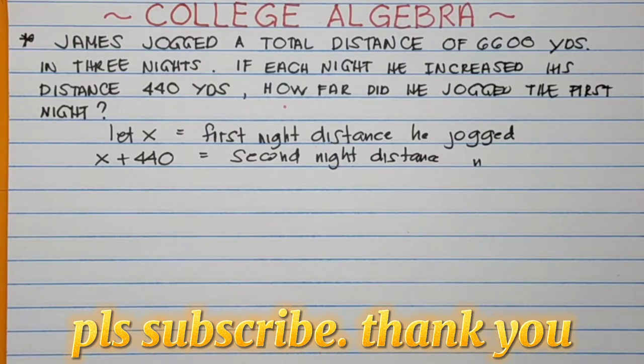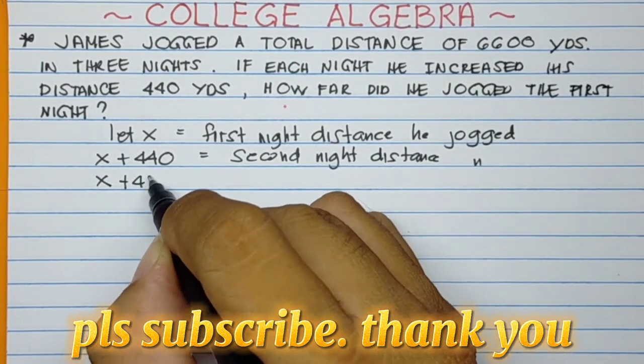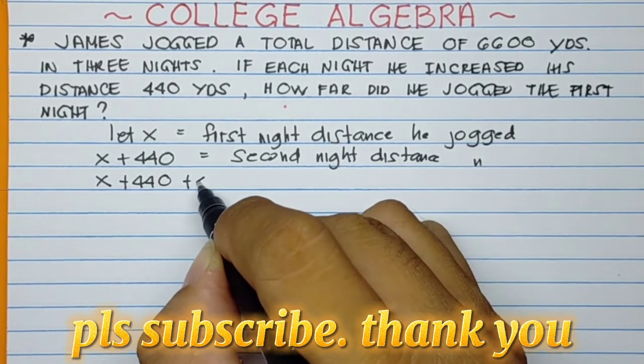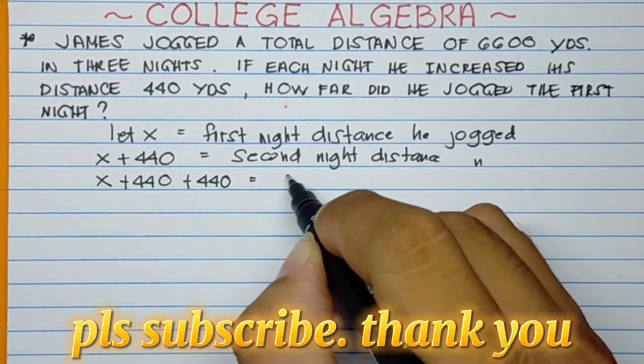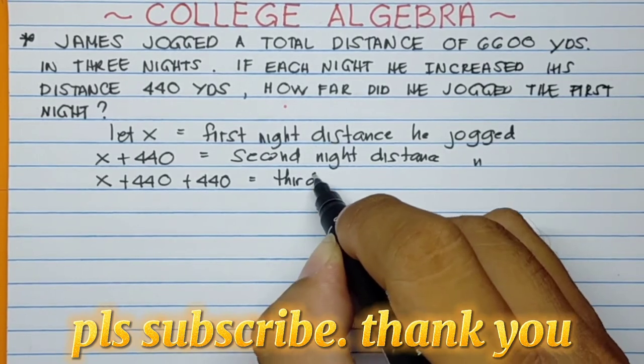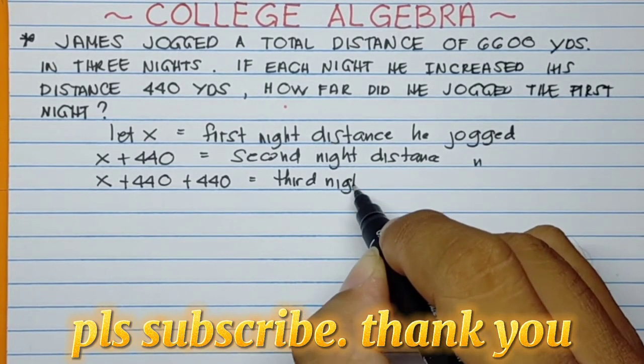So again, on the third night, increase again by 440 yards. That will be X plus 440 plus 440. So this will be the third night distance.